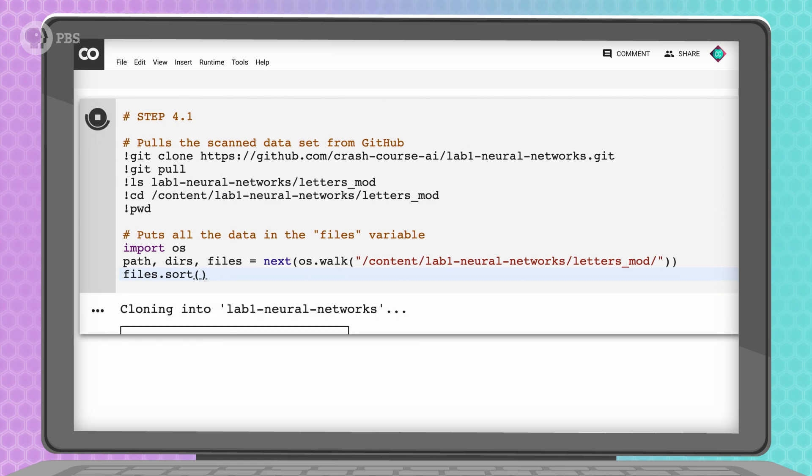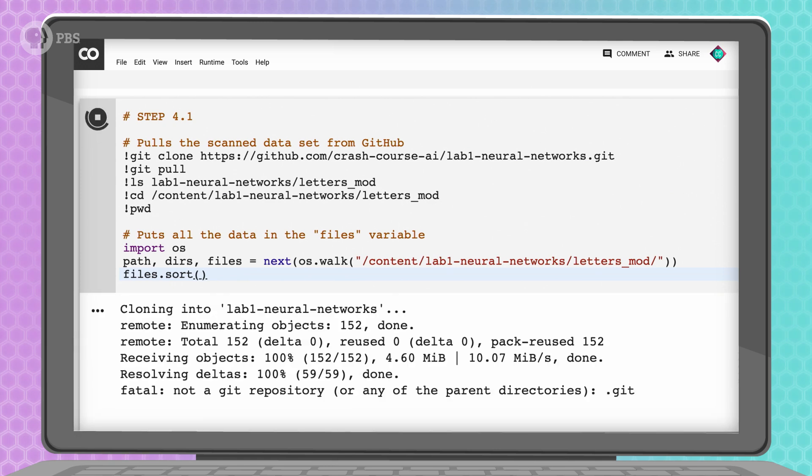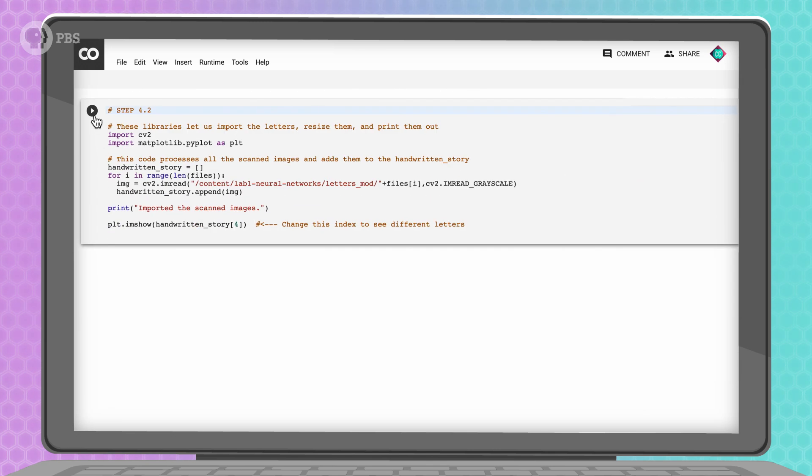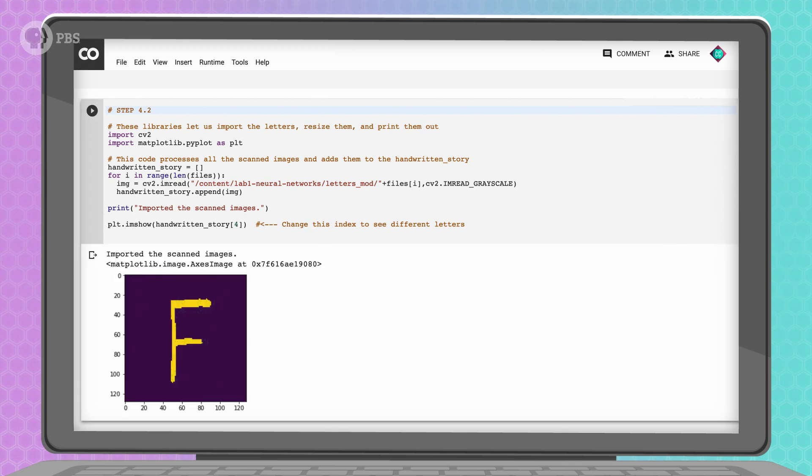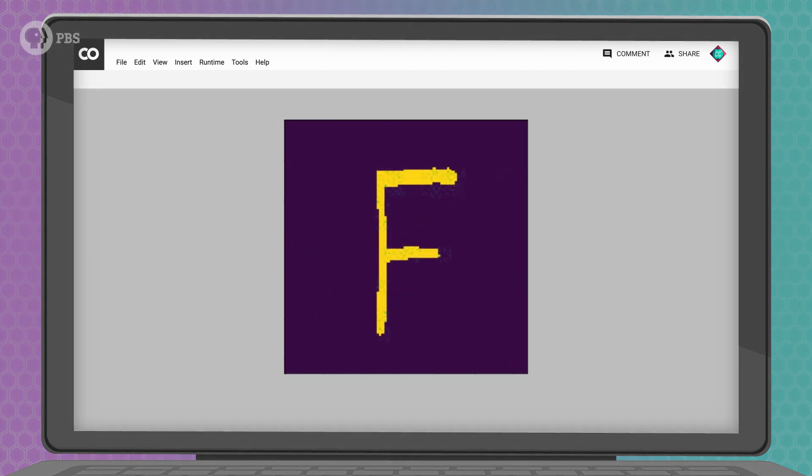So, now, back to the Collab Notebook. So, this code right here, in step 4.1, will pull the modified letters from GitHub. Now, we'll read them into an array and display one of them, just to make sure we're able to import them correctly. This looks pretty good. Clearer than the EMNIST data, actually.